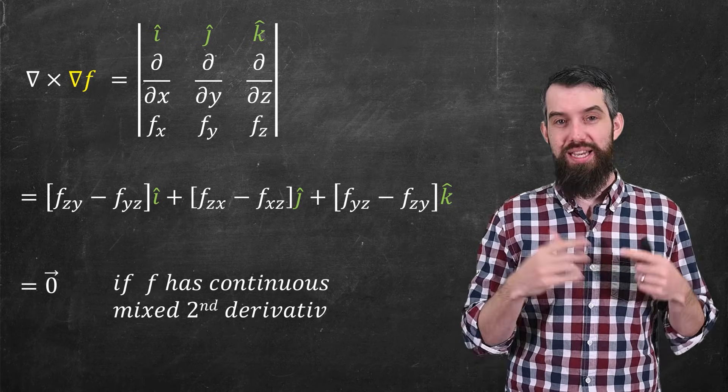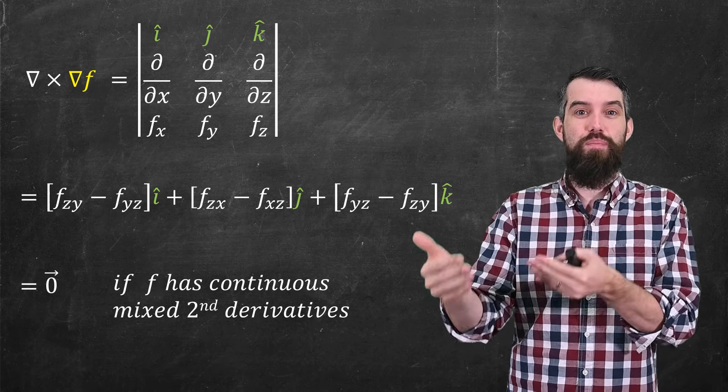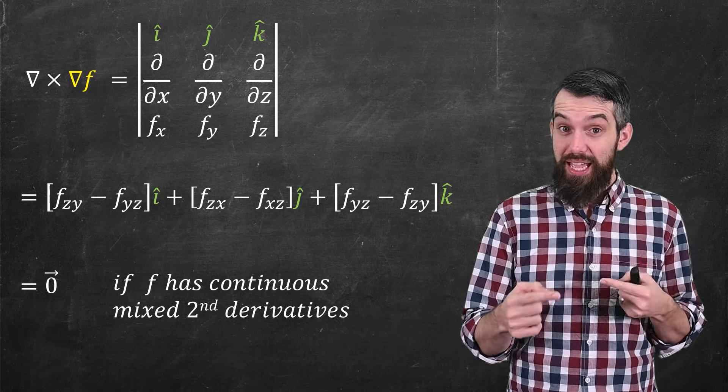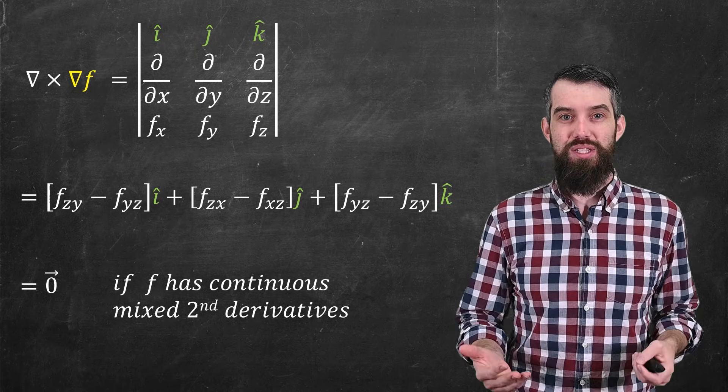provided you have some nice conditions on your f. For example, it has to have continuous mixed second partial derivatives. If that's the case, then the curl of the gradient of f is just zero. Now, why is this so nice? Well,